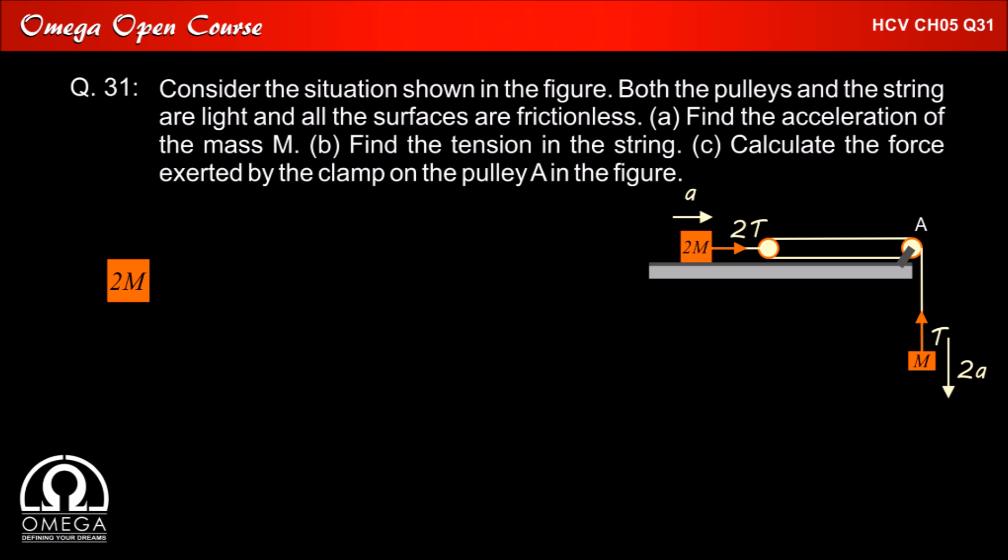Now, let us draw the free body diagram of the block of mass 2m. The only force acting on it in horizontal direction is tension 2T towards right. Since block is moving with acceleration A, 2T must be equal to 2ma which implies T is equal to ma.